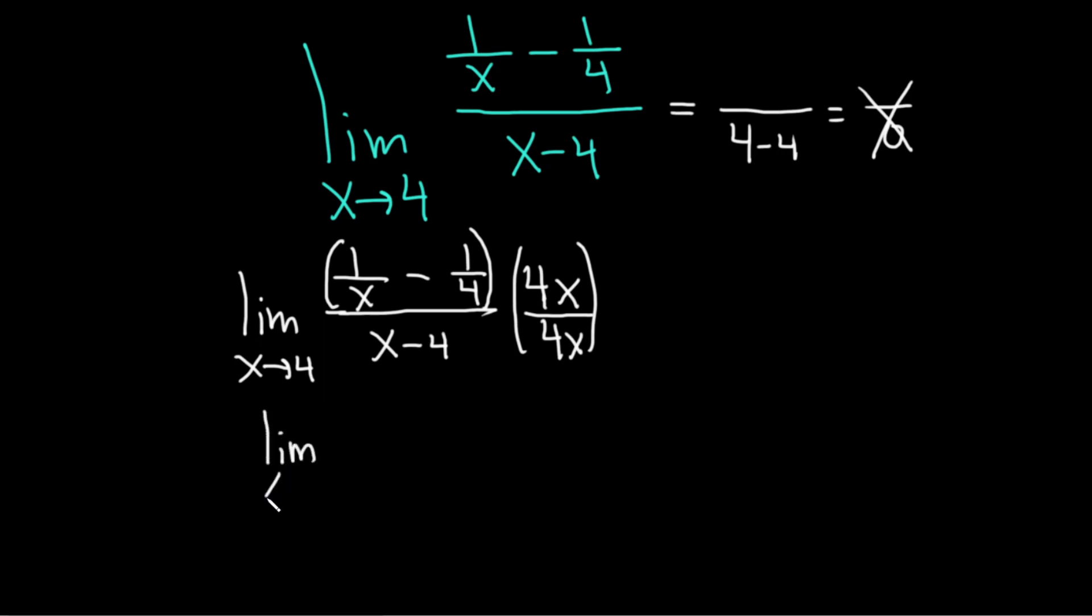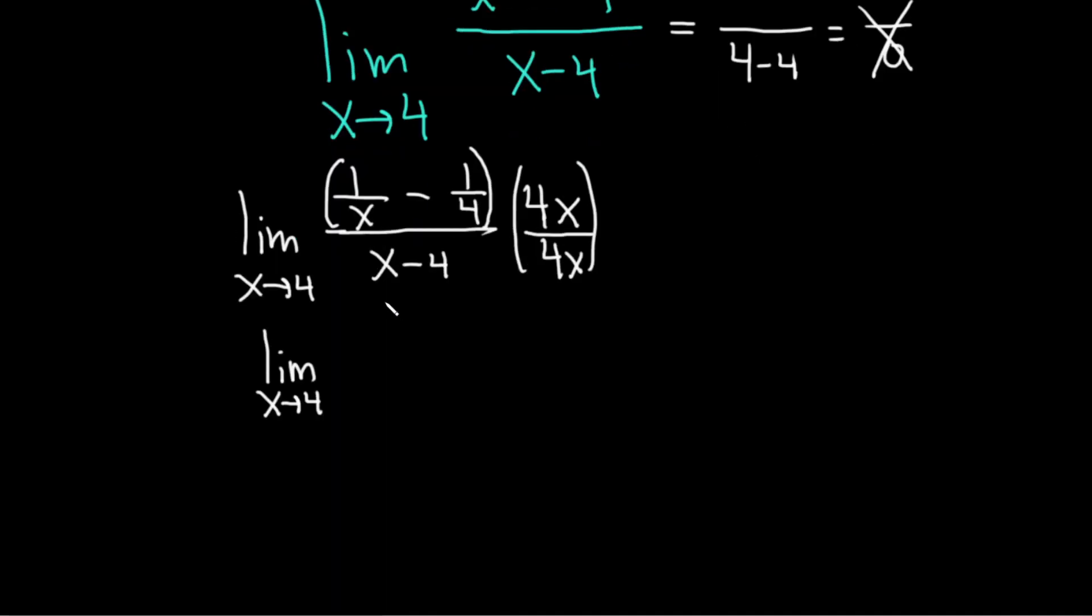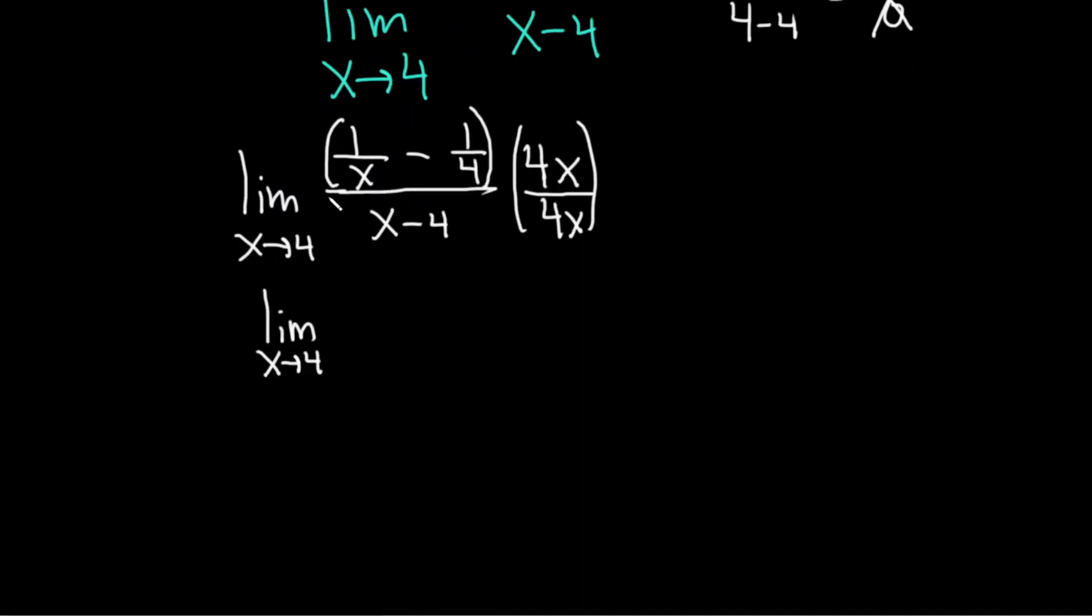So we have the limit as x approaches 4. And so now we're going to distribute. Normally I would do this in my head but because this is a video I'll go ahead and show you the work. So it's 1 over x times 4x